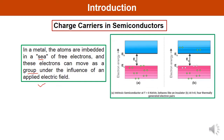In this diagram, intrinsic semiconductors are shown. In the first case it is at T equal to zero. EG is the energy band gap. You can see the valence band is filled but the conduction band is empty. As temperature increases, at T greater than zero, some electrons from the valence band can move to the conduction band and participate in the conduction process.